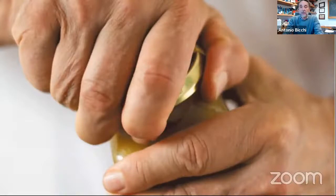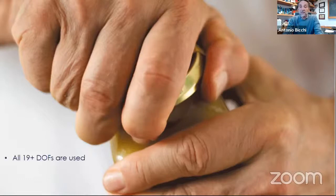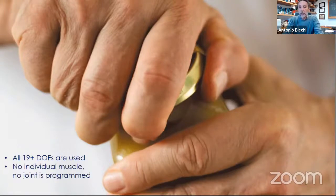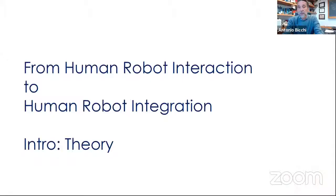If you compare with a human hand, the human hand can do incredible things. It's a very complicated system. It has 19 degrees of freedom. It has 40 muscles. All of them are used even in the simplest application, like uncapping a jar of marmalade. But we do not think of any individual muscle while we use it. No joint is programmed. So we should reach in robotics a level where we can do similarly. Use our robots without thinking of them.